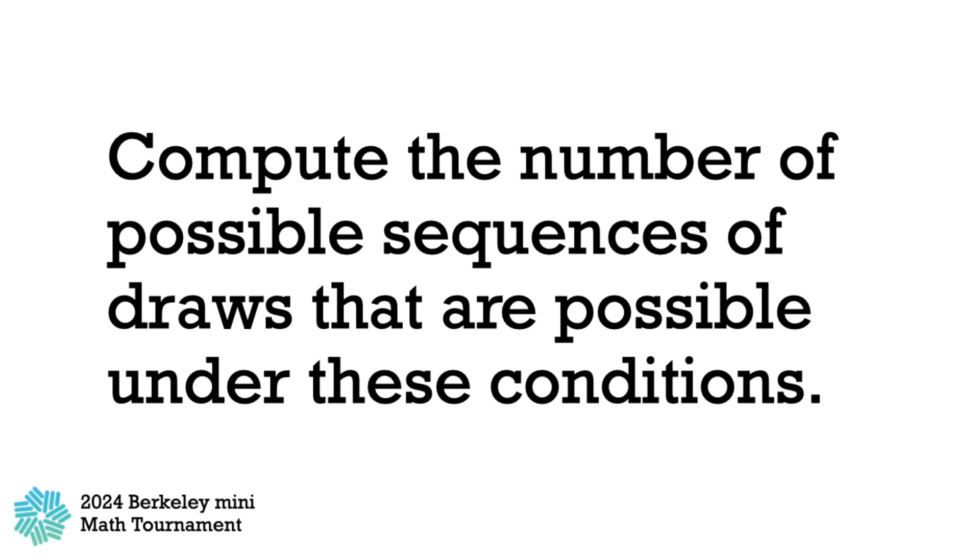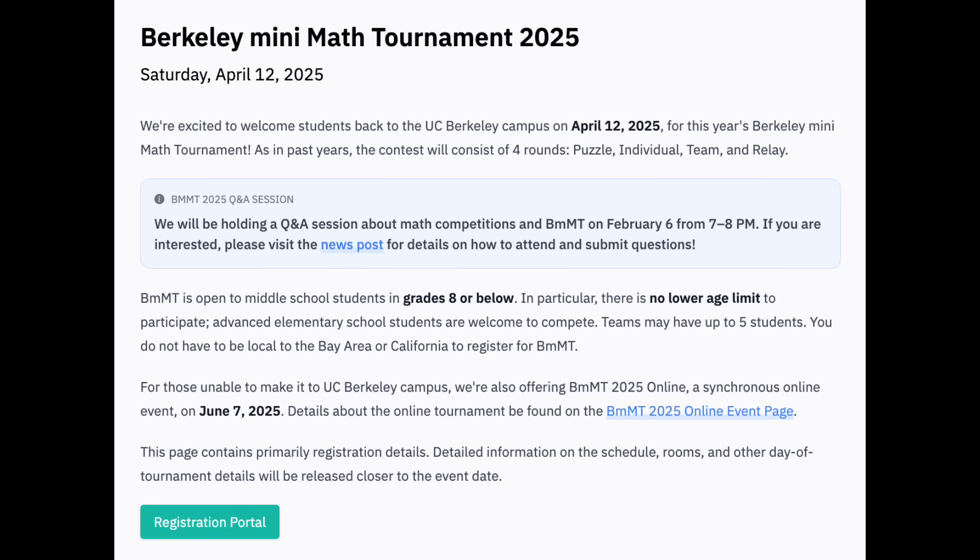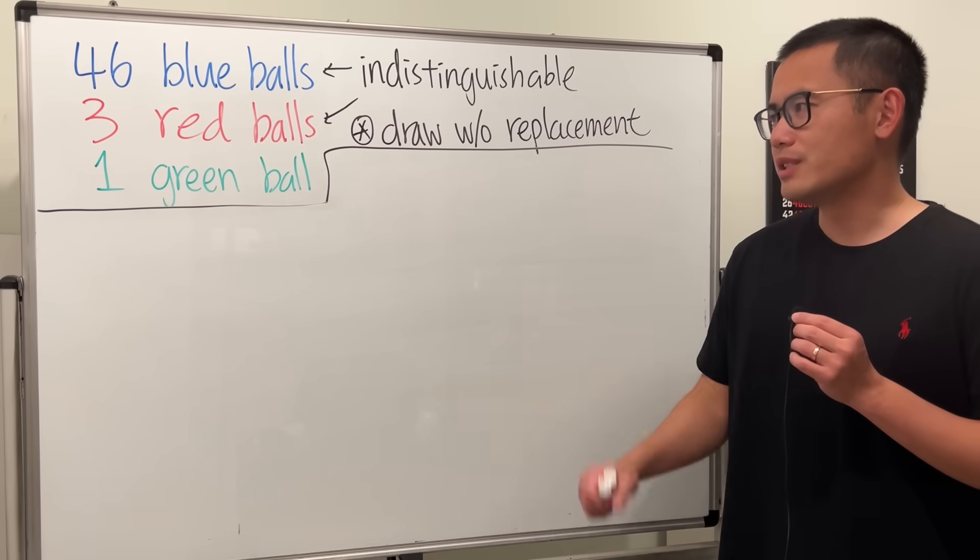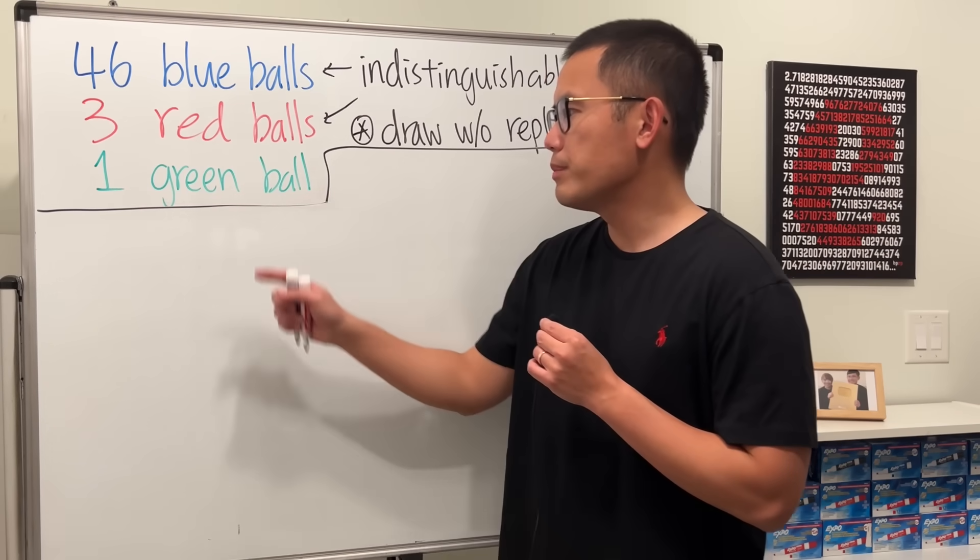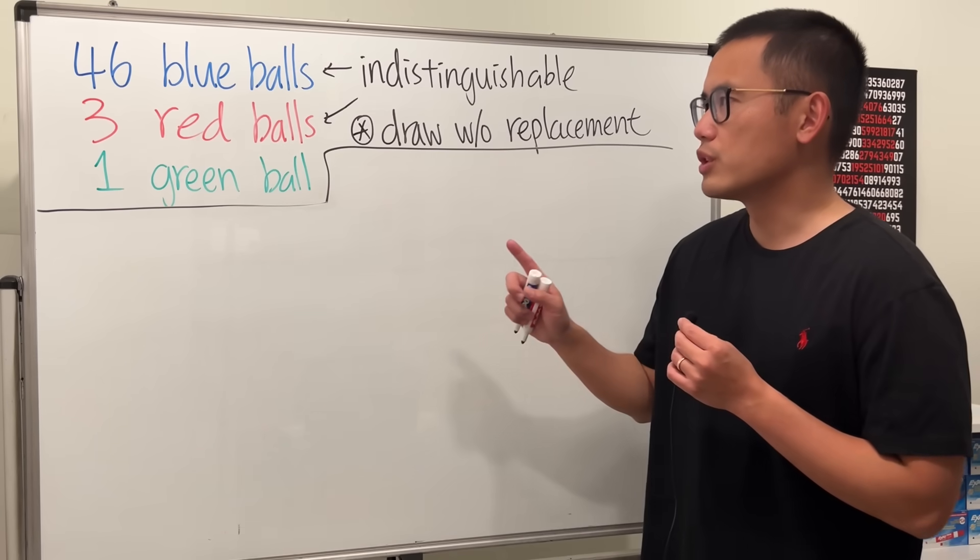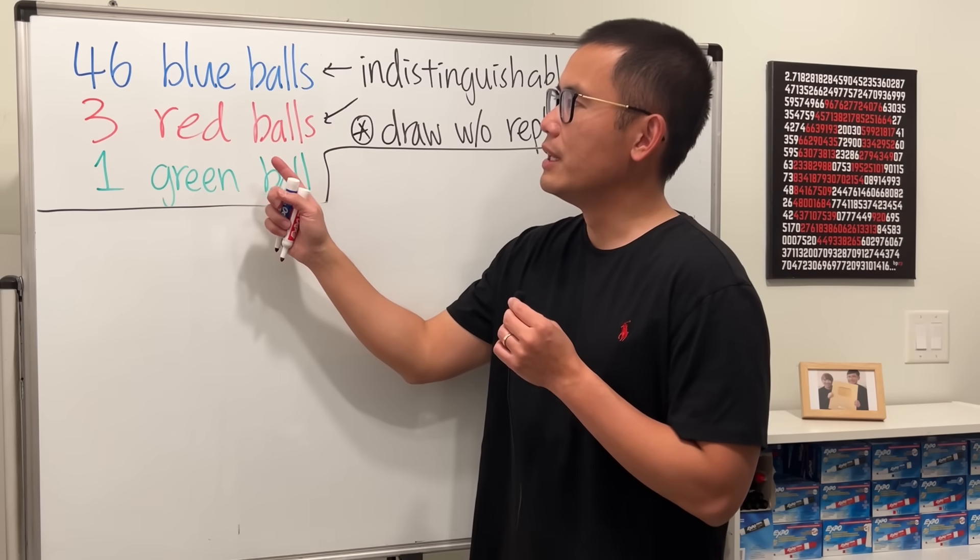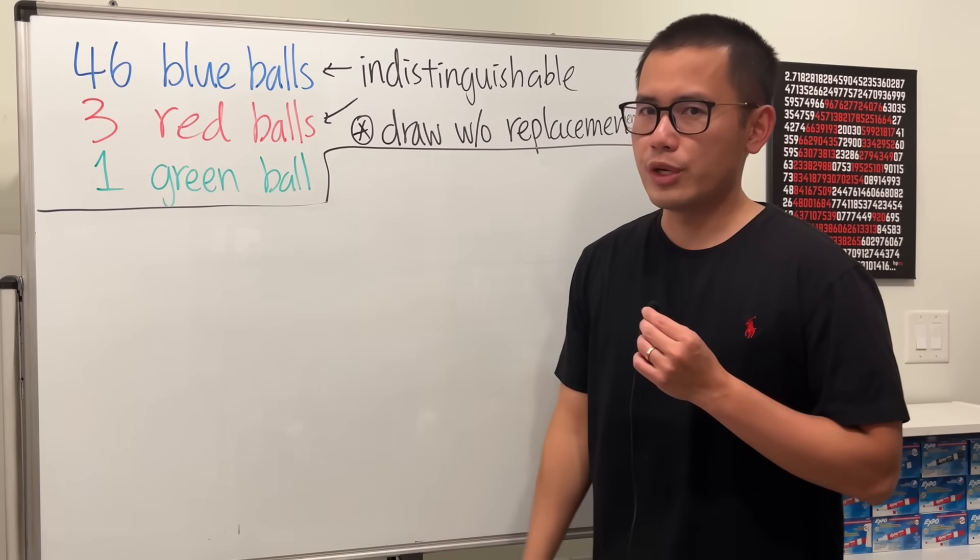Compute the number of possible sequences of draws that are possible under these conditions. So how can we solve something like this? Well, we know that once we get the green ball, the whole thing stops, so we should just focus on the blue and also the red. And now, because we only have 3 red balls compared to 46 blue balls, let's focus on the red first.